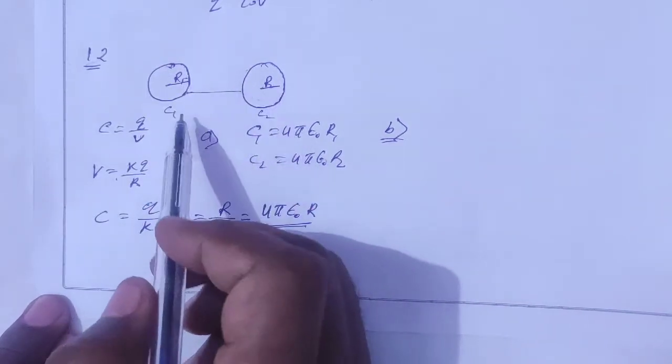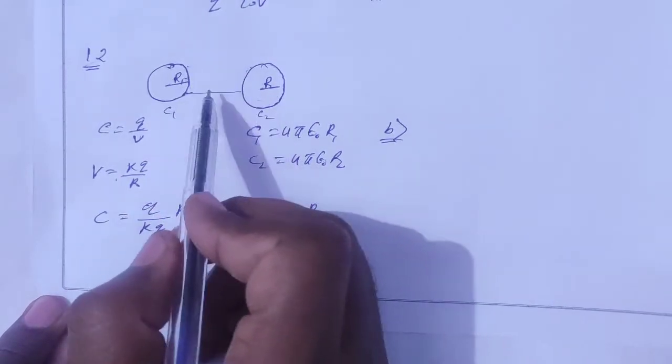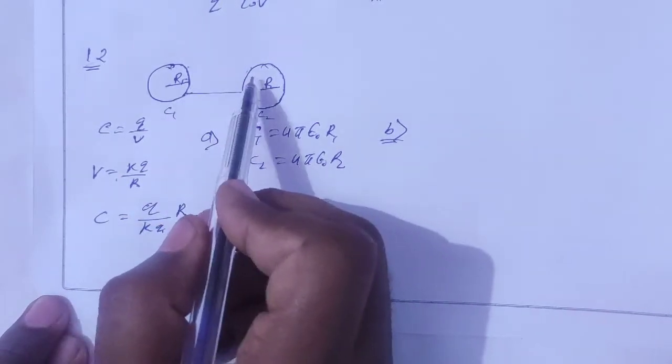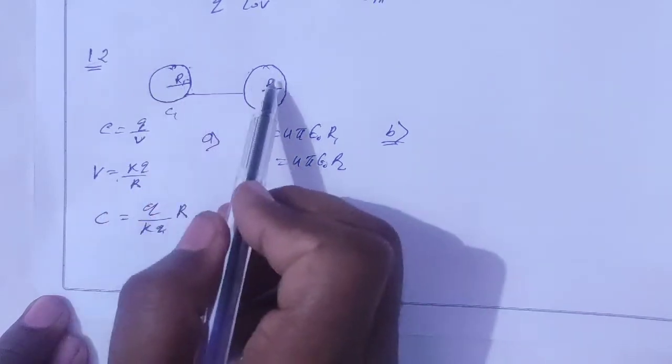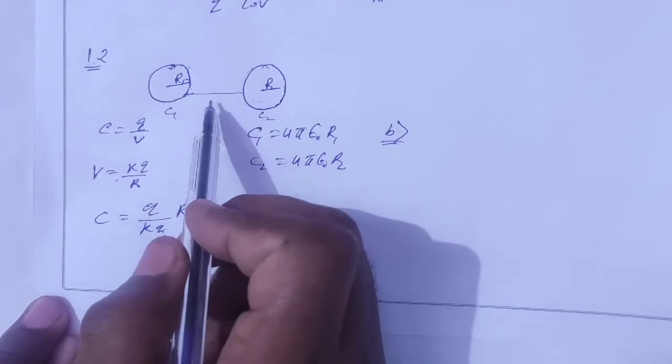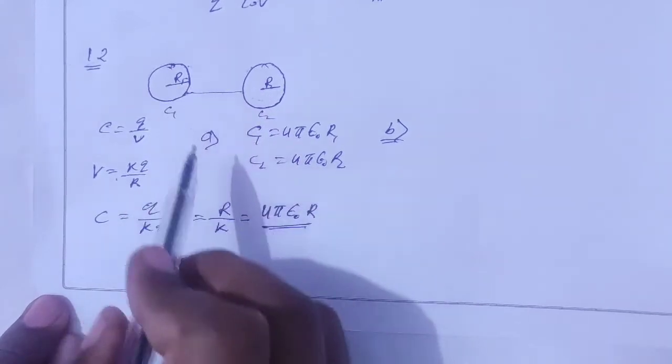What is parallel combination? If one is positive and one is negative, it's parallel combination. Here the sphere is one plate, both sides are one. How will the combination be? Parallel combination.